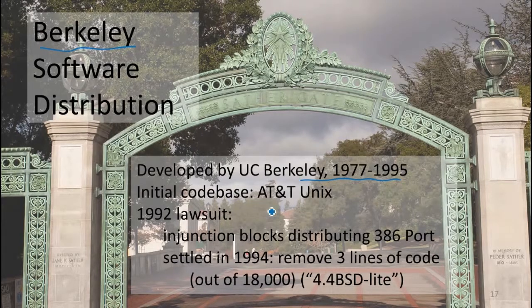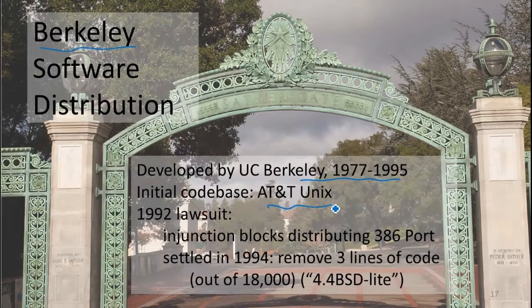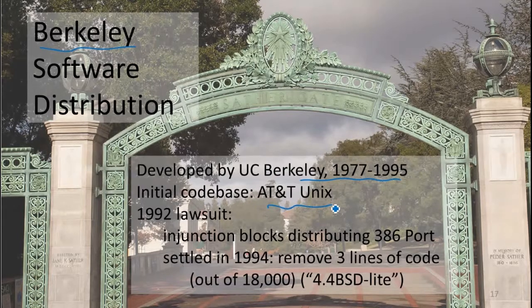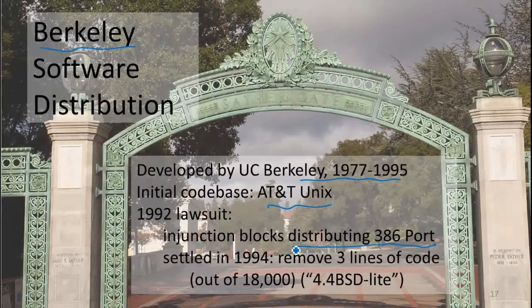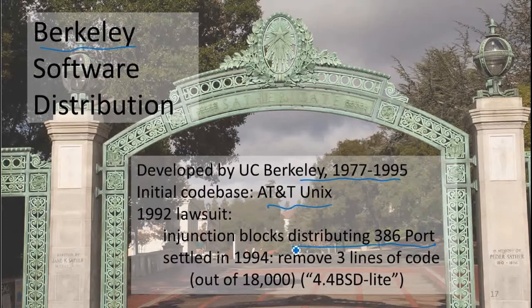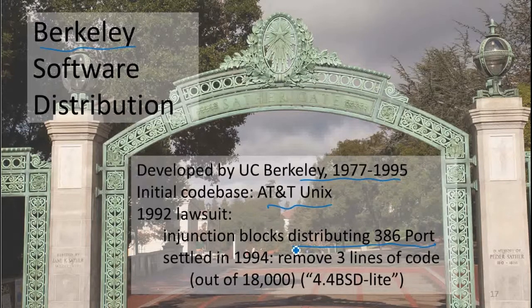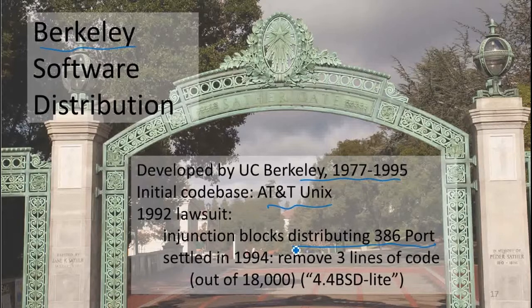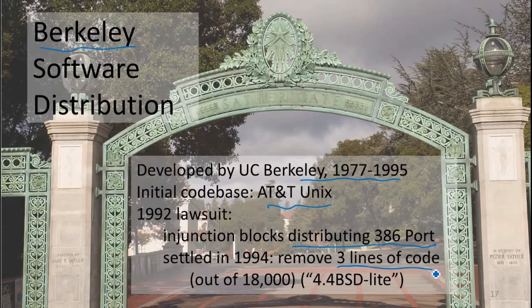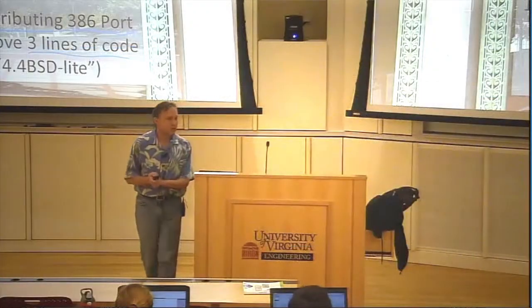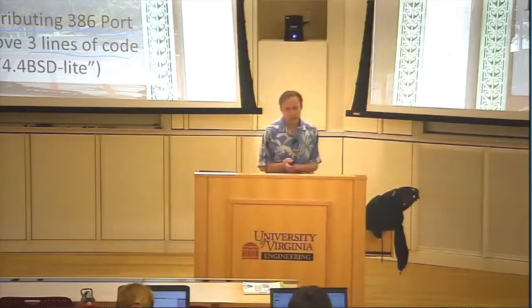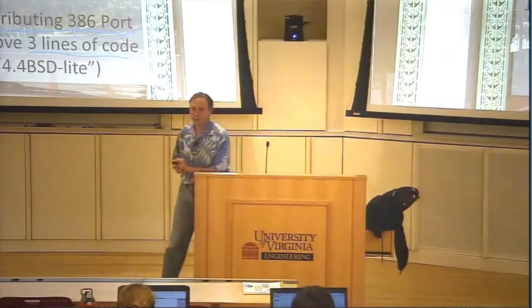As we got into the 90s, AT&T started thinking they could make money from using UNIX. They started a vision trying to make money out of UNIX and they sued Berkeley. That lawsuit blocked distribution of the 386 port that was under development. This is why Linus Torvalds had to start his own 386 version of UNIX instead of using the main distribution. The lawsuit got settled a couple of years later, and they had to remove three lines of code that AT&T seemed to have a claim on. It became called BSD Lite after those three lines were removed.